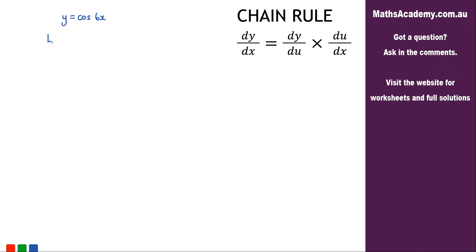So the first step is to make the substitution. Let u equal 6x. We need to differentiate that, so du by dx, that's just going to be equal to 6. So what we've got so far is that y is equal to cosine of u, now that we've made that substitution.